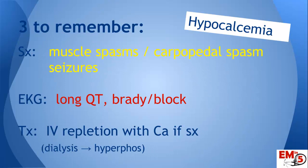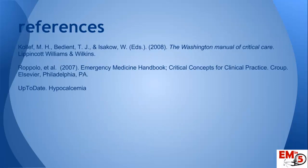Three things to remember for hypocalcemia: the symptoms are going to be muscle spasms, carpopedal spasms, and seizures. Make sure you get an EKG — look for a long QT, bradycardia, or even heart block. Your treatment is IV repletion with calcium if they're symptomatic, and think about dialysis in a patient with hyperphosphatemia. Thanks for joining us on EM in 5.